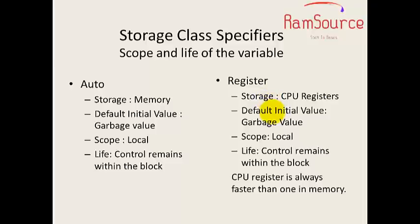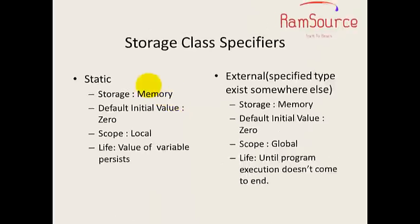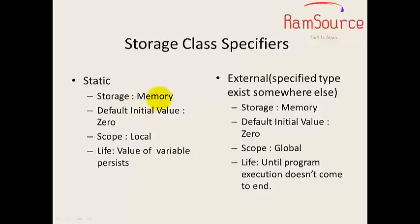Static: The default initial value is zero. If you don't initialize a static variable, the default is zero. The scope is local, but the value of the variable persists - the value is retained between function calls. Extern: Default value is zero, and the variable can be used in other files throughout the program.